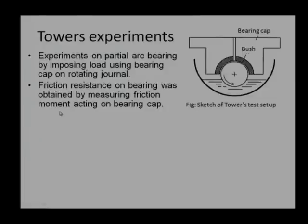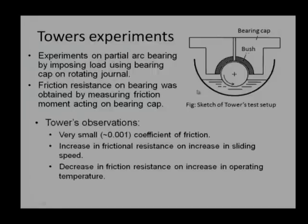It was difficult to measure the friction force at that time, but Tower used a lever arrangement and pin joint to measure it. The measurement may not have been highly accurate, but the data were very relevant and scientifically meaningful. Tower's observation was a coefficient of friction of approximately 0.001 — a very low value.